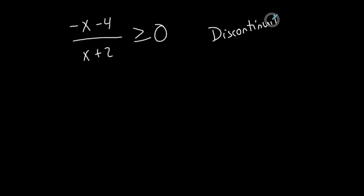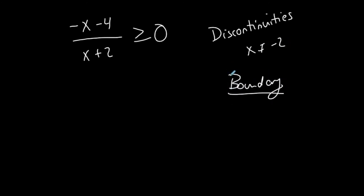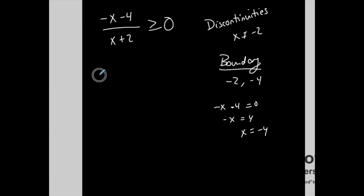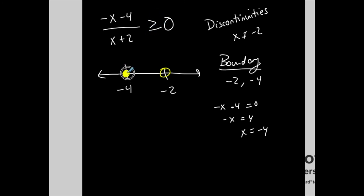Now I have my rational inequality in proper form with zero on the right and a single fraction on the left. The discontinuity is at x equals negative two since that makes the denominator zero. Setting the numerator equal to zero: negative x minus four equals zero gives x equals negative four. So my boundary values are negative four and negative two. I place them on a number line — always open at the discontinuity (negative two), and closed at negative four because the inequality is greater than or equal to.